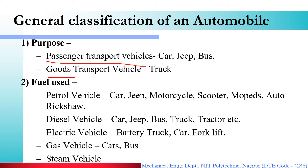When automobiles were first developed, some vehicles ran on steam engines — those are steam vehicles. This technology is very old and is no longer seen in use. Then there are hybrid vehicles, which combine two power sources: petrol and electric, petrol and gas, or diesel and electric. These hybrid vehicles are also available in the market nowadays.